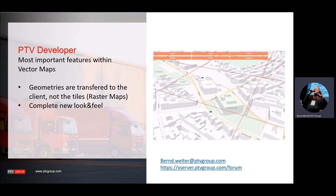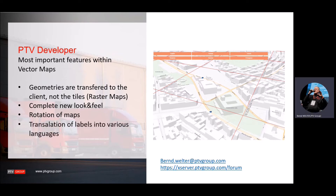Furthermore, you have access to a complete new look and feel. You can apply tilting and rotation to maps. This is helpful if you want to build some kind of a driver's heading-based rendering style. You can also apply the translation of labels into different languages. And finally, we also offer the ability to display three-dimensional buildings in larger cities, wherever we get the data from our providers.